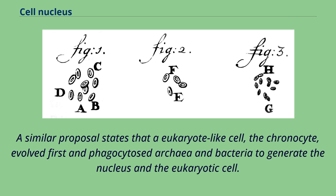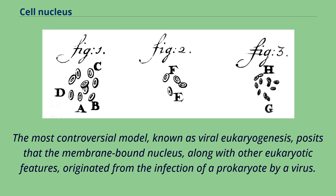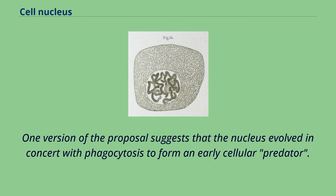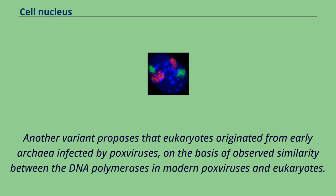The most controversial model, known as viral eukaryogenesis, posits that the membrane-bound nucleus, along with other eukaryotic features, originated from the infection of a prokaryote by a virus. The suggestion is based on similarities between eukaryotes and viruses such as linear DNA strands, mRNA capping, and tight binding to proteins. One version of the proposal suggests that the nucleus evolved in concert with phagocytosis to form an early cellular predator. Another variant proposes that eukaryotes originated from early archaea infected by poxviruses, based on observed similarity between the DNA polymerases in modern poxviruses and eukaryotes. It has also been suggested that the unresolved question of the evolution of sex could be related to the viral eukaryogenesis hypothesis.